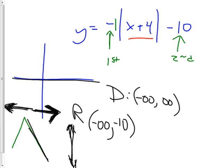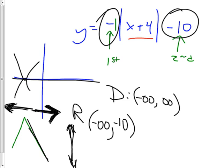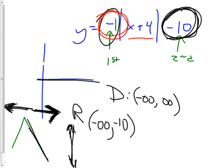With an up-down flip, everything that was above the axis goes down the same amount it was above. Minus 10 means down 10, so it ends at down 10. The key is order of operations: multiply by negative one comes before subtract 10, so you must flip first. If you move it down 10 first and then flip, you end up in the wrong spot — that's the mistake.